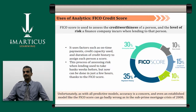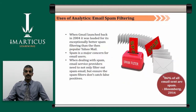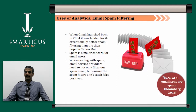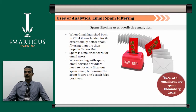FICO score is used to assess the credit worthiness of a person and the level of risk a finance company incurs when lending. Analytics is also used to perform spam filtering. When Gmail launched in 2004, it was lauded for its exceptionally better spam filtering than the then-popular Yahoo Mail. Email service providers need not only filter out spam but also ensure spam filters don't catch false positives. According to a Bloomberg survey conducted in 2016, 86% of all emails sent are spam, making a strong and powerful spam filtering system essential for retaining email users.